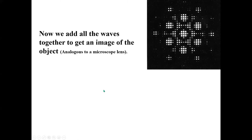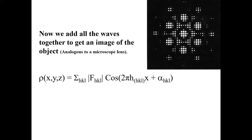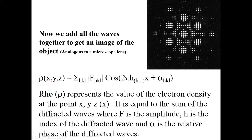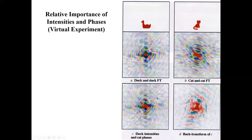Now that we have measured the intensities, assuming we get the phases alpha from somewhere, we can do a summation over all the indices H, K, L and add all the waves together at any point X, Y, Z to determine the electron density rho at that point X, Y, Z. So rho represents the value of the electron density at a point X, Y, Z — and that's how we construct our electron density maps.